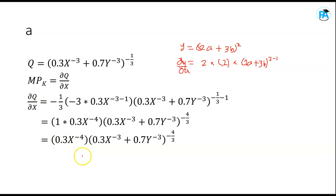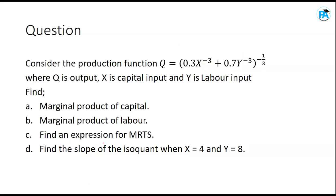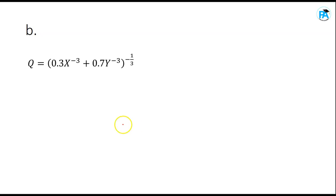So the marginal product of capital (MPK) equals 0.3x^(-4) times (0.3x^(-3) + 0.7y^(-3))^(-4/3). This is the final answer for part (a). Now let's look at part (b): finding the marginal product of labor.